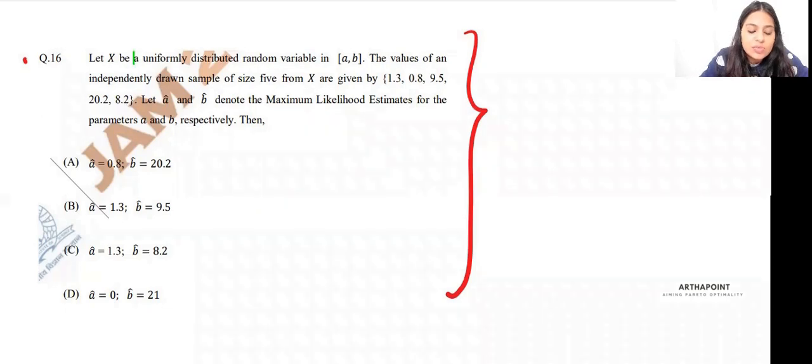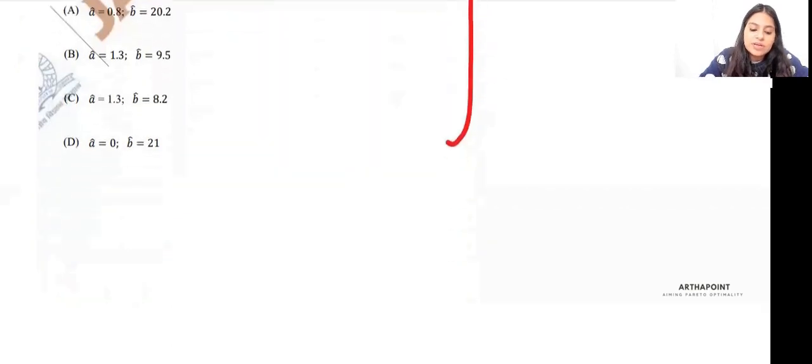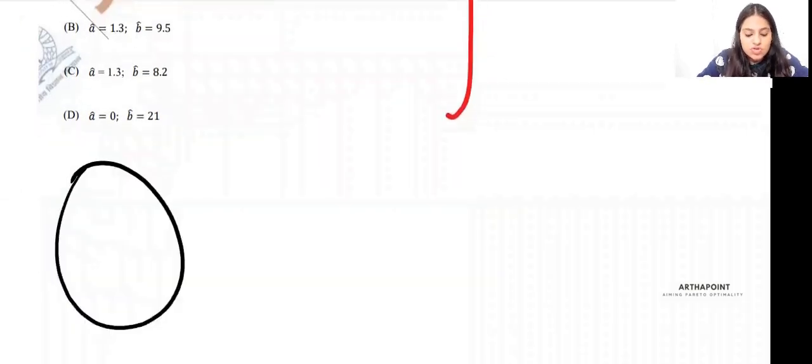The moment you see uniform distribution, it is not possible to apply the usual method of maximum likelihood estimator. First, let me show you why. What the problem says is that we have an independently drawn sample of size 5 from X, and the population is uniformly distributed.